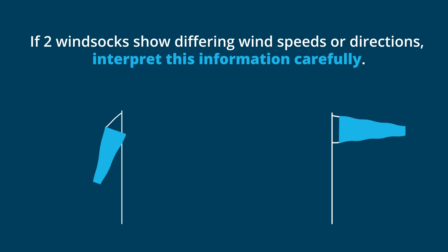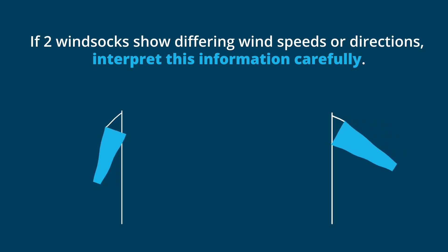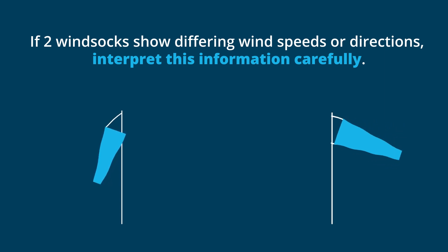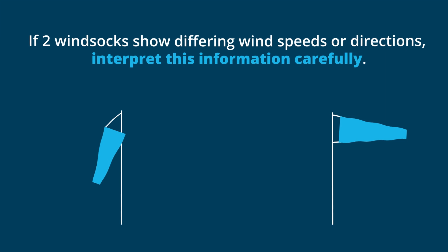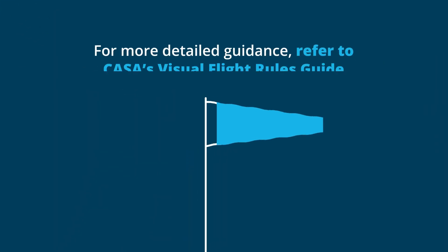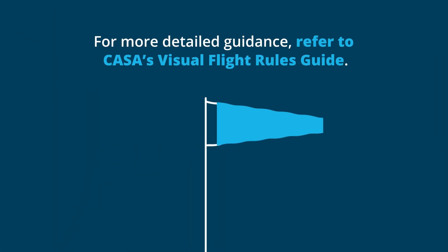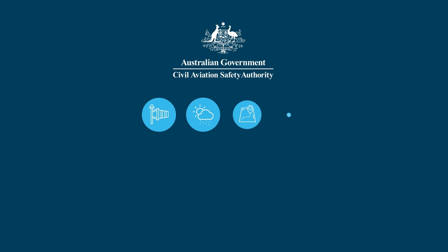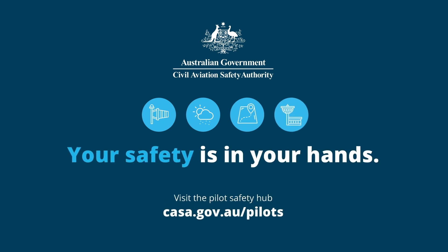If two windsocks show differing wind speeds or directions, interpret this information carefully. For more detailed guidance, refer to CASA's Visual Flight Rules guide at casa.gov.au/pilots.